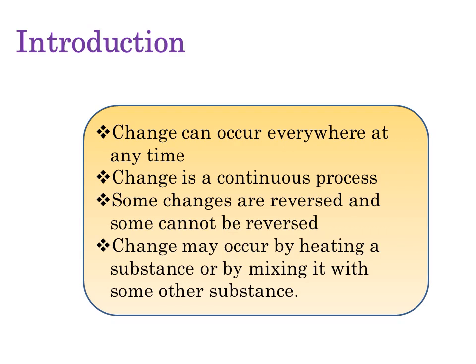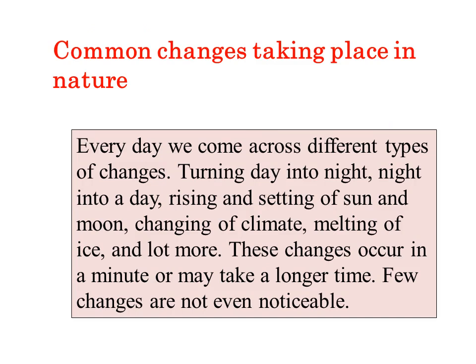Examples include our hair and nails, which keep growing, leaves die and new leaves take their place. While some changes in our environment are temporary and can return to their original state, other changes are relatively permanent. Every day we come across different types of changes: turning day into night, rising and setting of the Sun and Moon, changing of climate, melting of ice, and a lot more. These changes occur in a minute or may take a longer time, and some changes are not even noticeable.